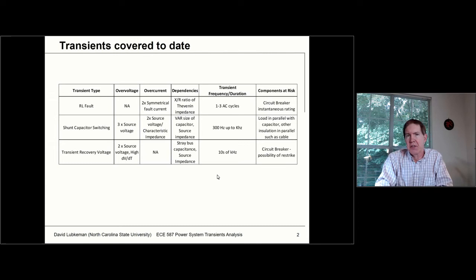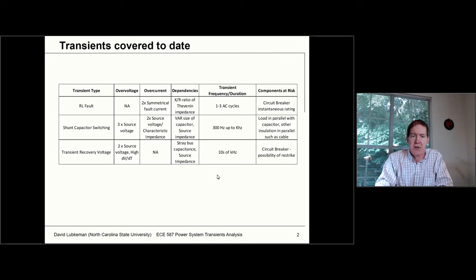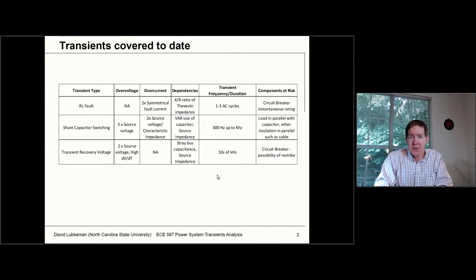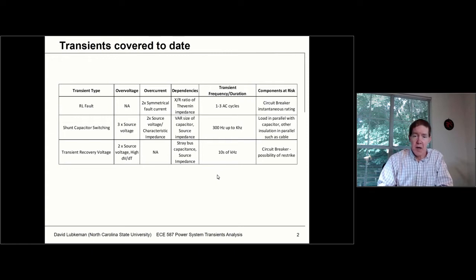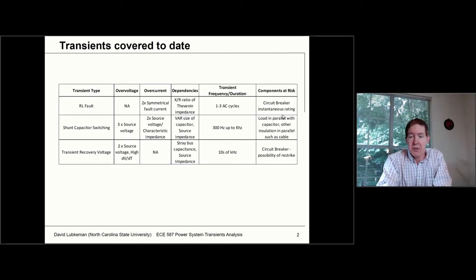As far as transients, we've looked at three different types. We've looked at an RL fault transient — there's not an overvoltage associated with this, it's more of an overcurrent. Basically, there's going to be a difference between the instantaneous asymmetrical current in the first few cycles after the fault occurs and the symmetrical fault current if you neglect the X to R ratio. That's dependent on the ratio between omega L and resistance. The higher that value, the more DC offset you could have, seen during just the first cycle or two — this is where we'd be concerned about the circuit breaker's instantaneous rating.